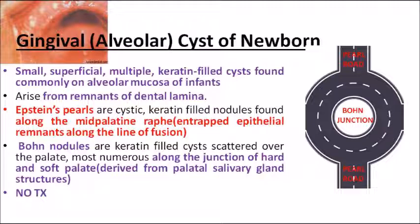To summarize: gingival cyst of newborn presents as multiple keratin-filled cysts in the alveolar mucosa of infants, arising from dental lamina remnants. Epstein pearls result from entrapped epithelial remnants along the line of fusion and are seen at the mid-palatal raphe. Bohn's nodules are seen at the junction of hard and soft palate, derived from palatal salivary gland structures. All three require no specific treatment — they resolve by themselves.